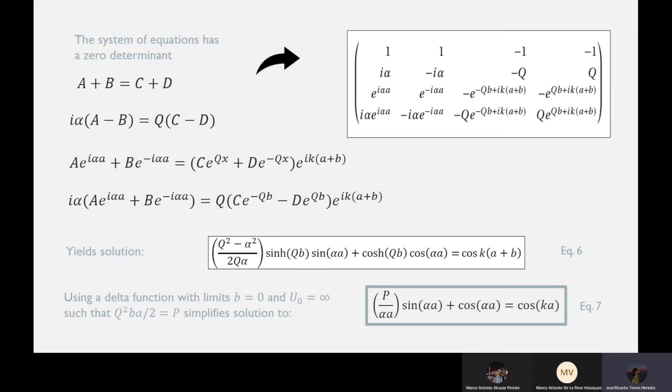Now this system can be arranged into a matrix that has a zero determinant, so we know that it's solvable. And after a rather tedious procedure, we find that the solution is that explained in equation 3, although we can do one more thing. By using a delta function with limits b equals 0 and u sub 0 at infinity, we are left with the fact that q squared ba over 2 equals p, which is a finite quantity.